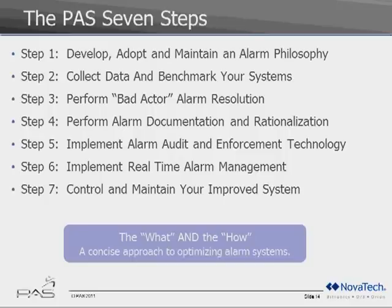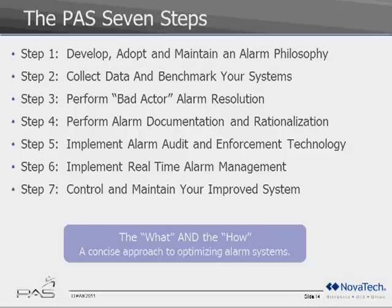That leads us to the PAS seven steps. In 2006, PAS published the Alarm Management Handbook, available on Amazon, which provided a proven seven-step methodology for solving an alarm system problem and accomplishing effective alarm management. There is really no conflict between this seven-step approach and the 18.2 life cycle methodology — they are essentially the same, marrying the what needs to be done with the how to implement a highly performing optimized alarm system.